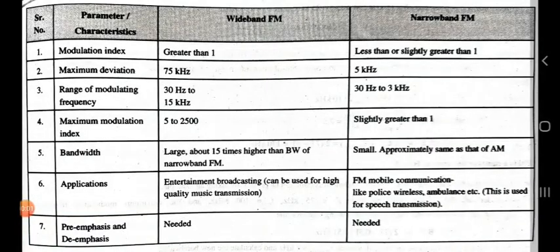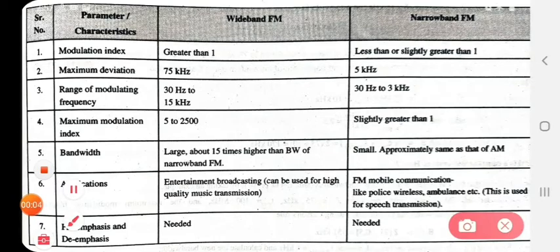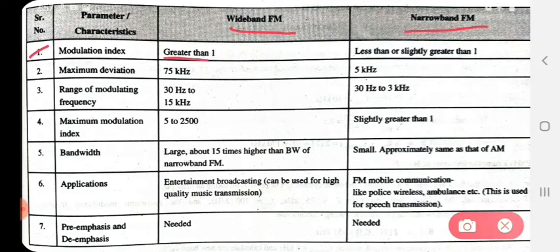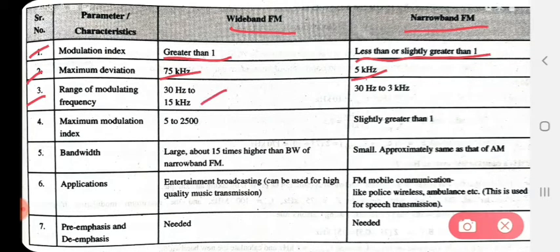Now see the next comparison: wideband FM versus narrowband FM. First parameter — modulation index: wideband FM has a modulation index greater than 1; narrowband FM has a modulation index less than or slightly greater than 1. Second parameter — maximum deviation: wideband FM is 75 kHz; narrowband FM is 5 kHz. Third parameter — range of modulating frequency: wideband FM is 30 Hz to 15 kHz; narrowband FM is 30 Hz to 3 kHz.